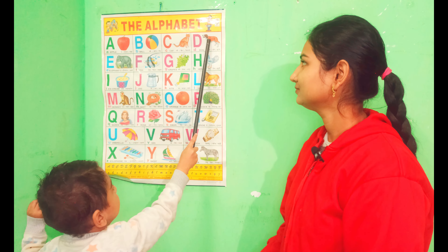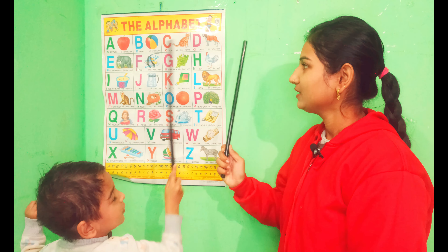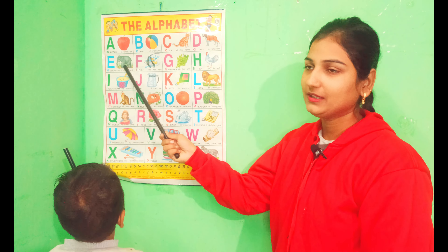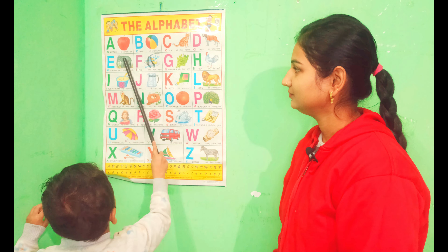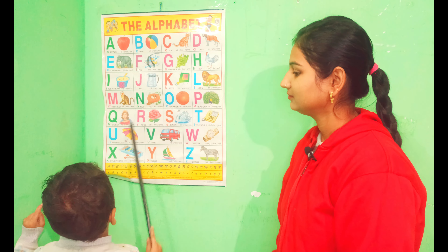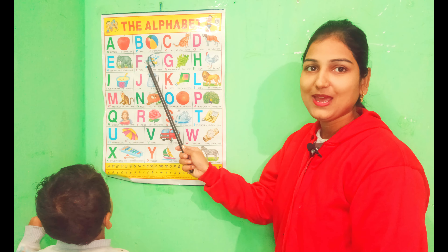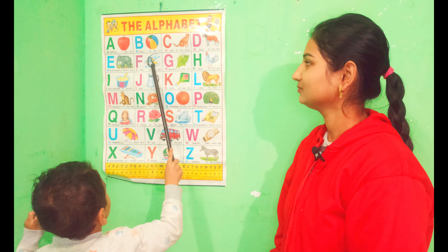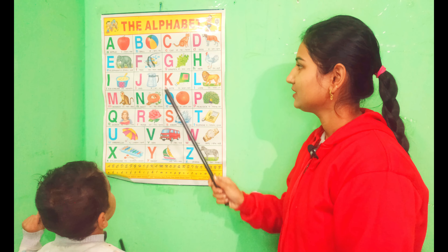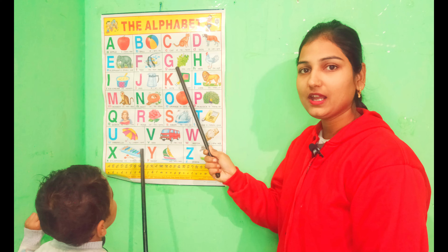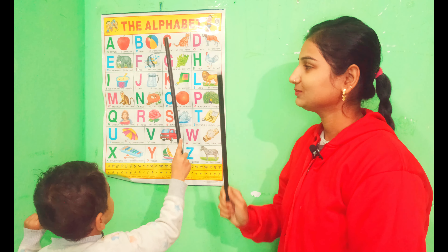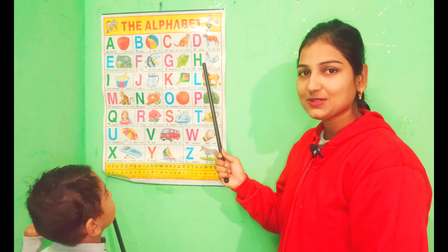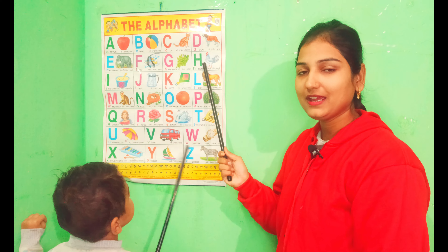E for elephant, F for fish, G for grapes, H for hen.